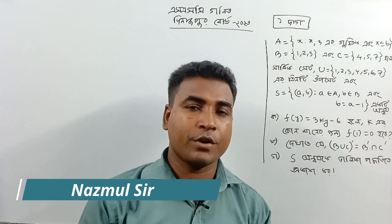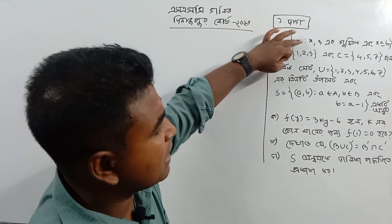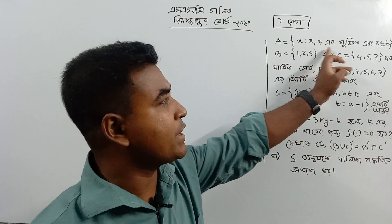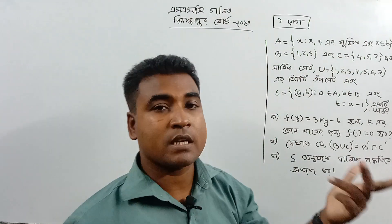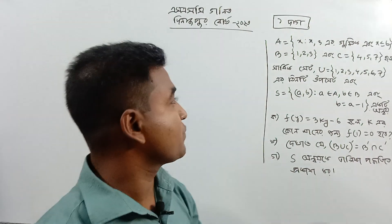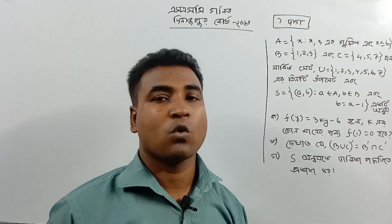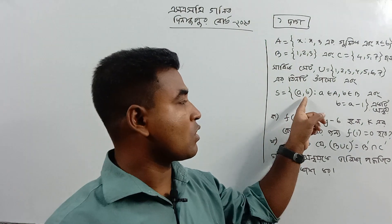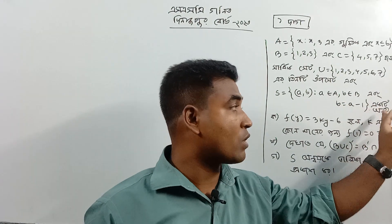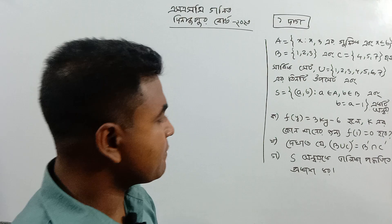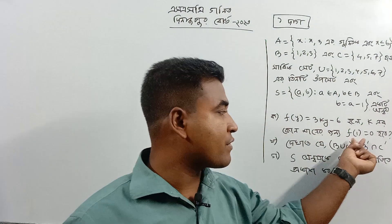We have a function. If you say f of y is equal to 3ky minus 6, which means f of 1 is equal to 0. This is the relation.